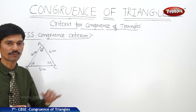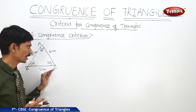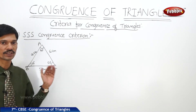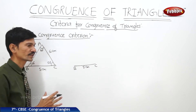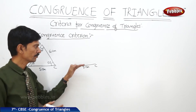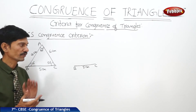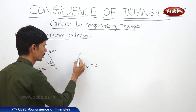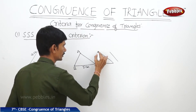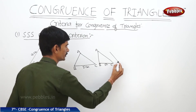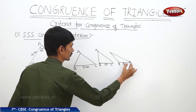Now if you want to draw a copy of the given triangle and you are given only one side — for example, side BC of 5 centimeters — you cannot draw the exact copy. With just BC, you could draw an acute angle triangle, a right angle triangle, or any other triangle. So we cannot draw an exact copy of the original triangle ABC with only one side.